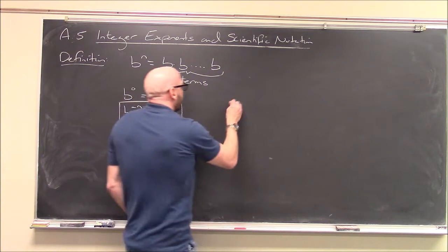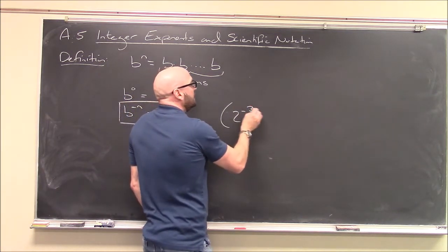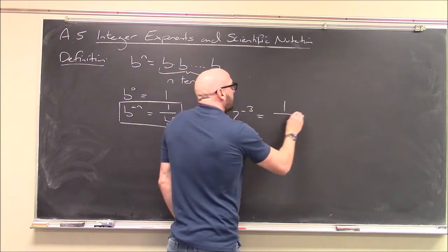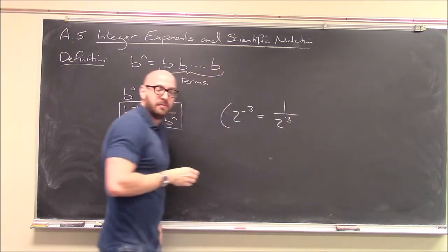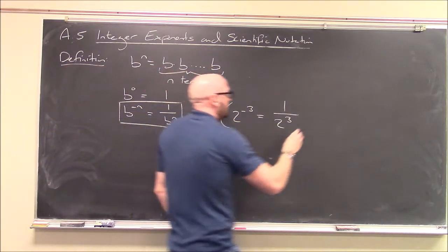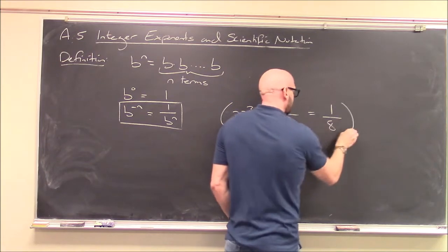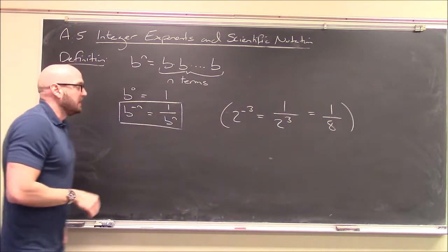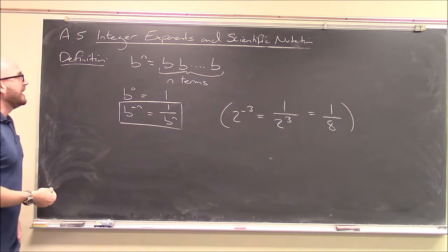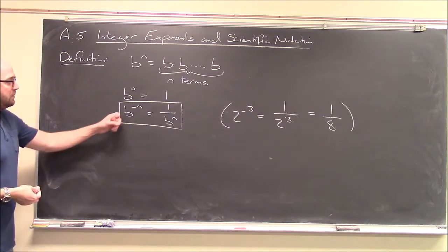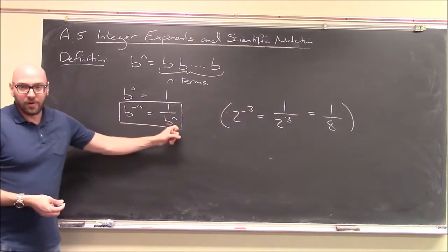So for example, something like 2 to the minus 3, well, that would mean 1 over 2 to the positive 3, which is just 2 cubed is 8, 1 over 8. Okay, so there's our definition. This is how we handle negative exponents. We treat this as just 1 over b to the n.